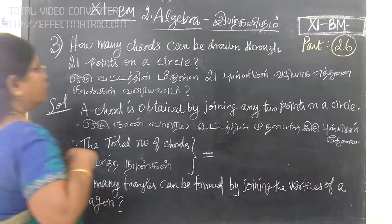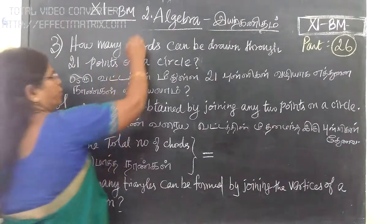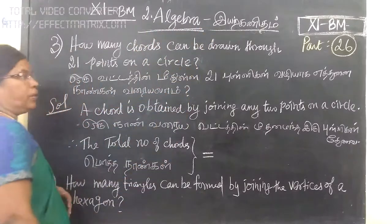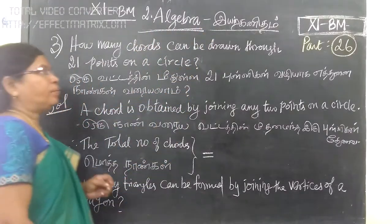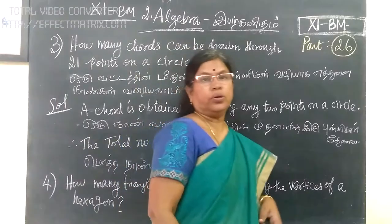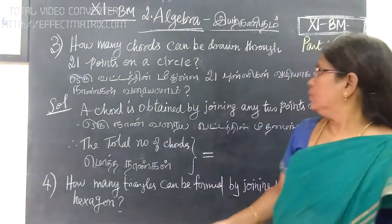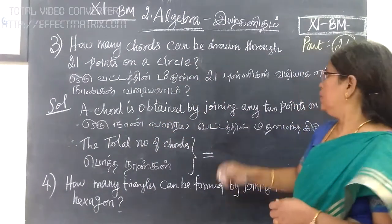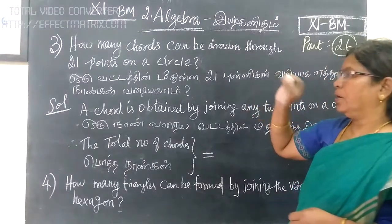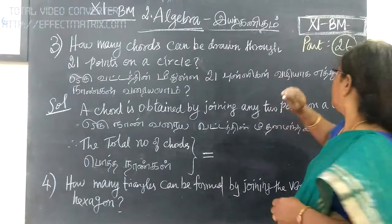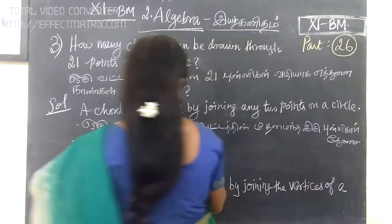11th Business Maths, 2nd Chapter Algebra, Question No. 3: How many chords can be drawn through the points on a circle? One circle has 21 points.